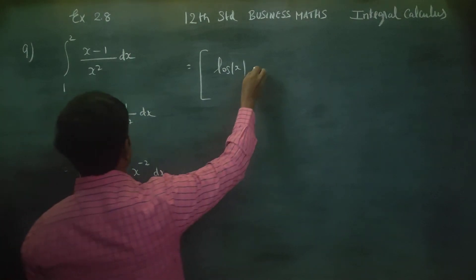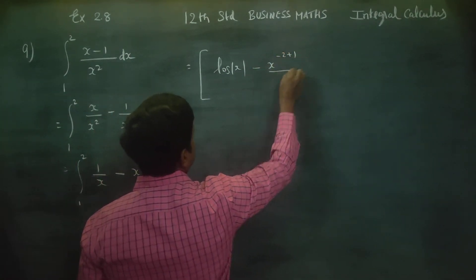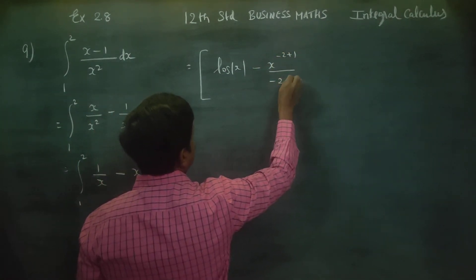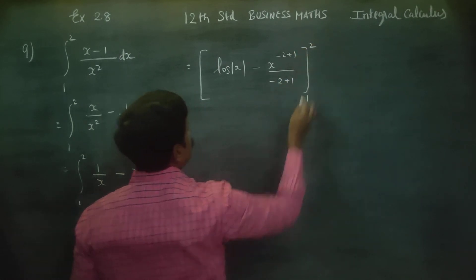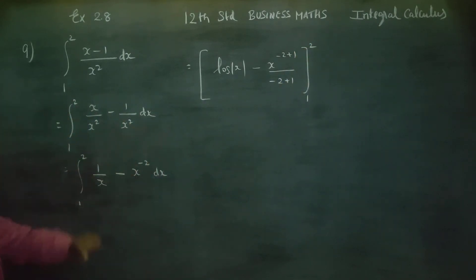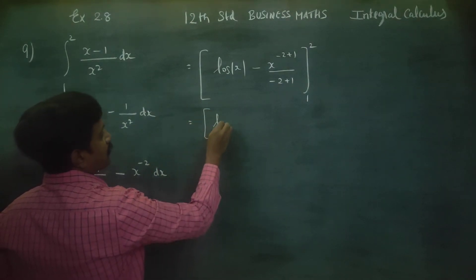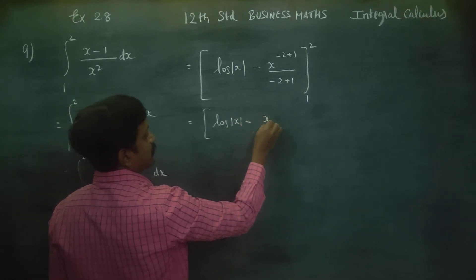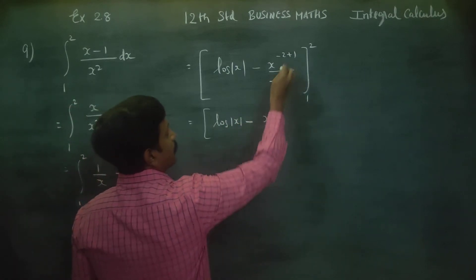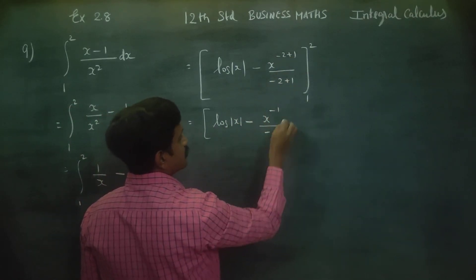For x power minus 2, you can integrate it. With the limits placed from 1 to 2, the antiderivative becomes: log x plus x power minus 2 plus 1 divided by minus 2 plus 1, which simplifies to log x minus 1 by x, evaluated from 1 to 2.